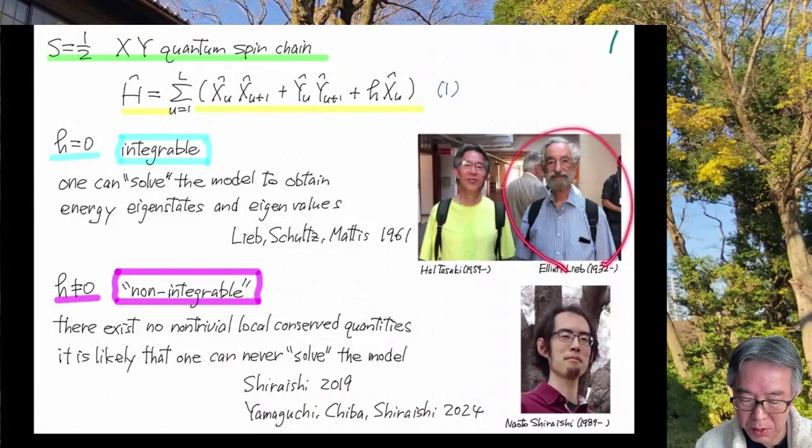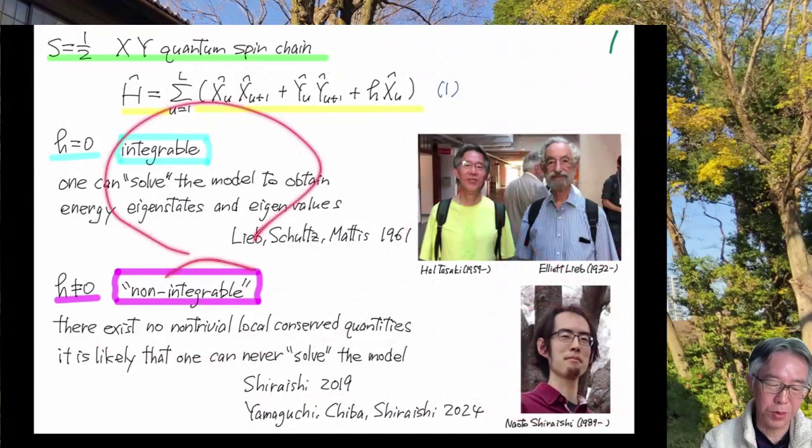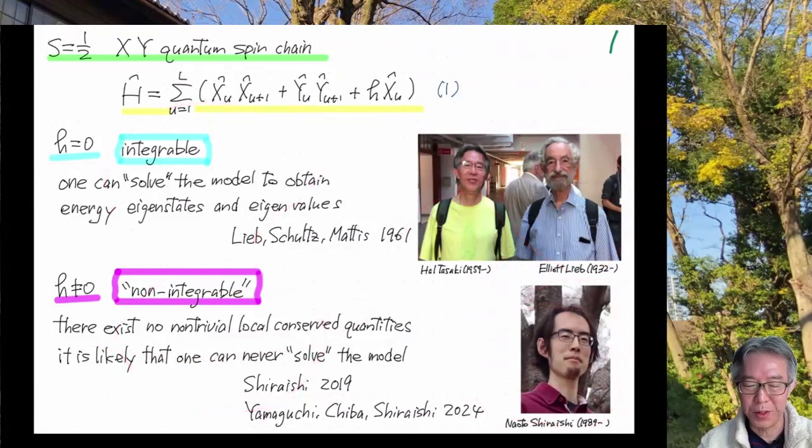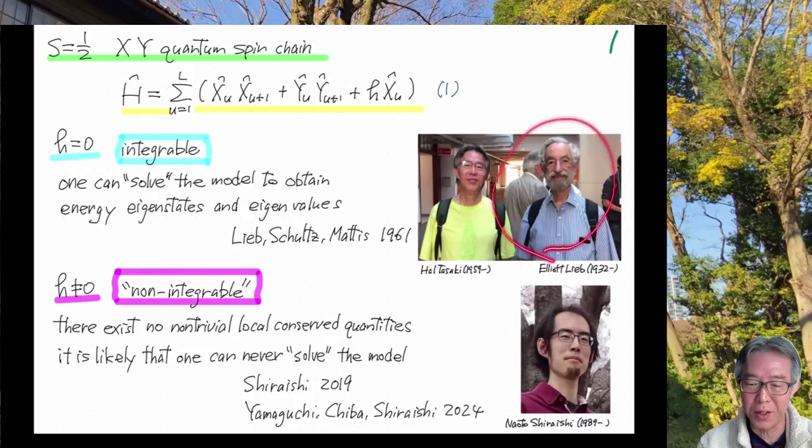So this is Elliot Lieb, this is Naoto Shiraishi, and of course, this is me. So as you see, Elliot belongs to the generation of my parents, and Naoto belongs to the generation of my children. So it is kind of amazing to talk about these two very interesting topics done by somebody as old as my parents and somebody as old as my children.